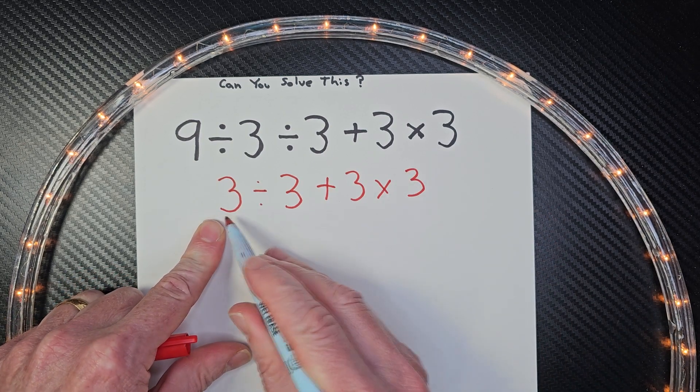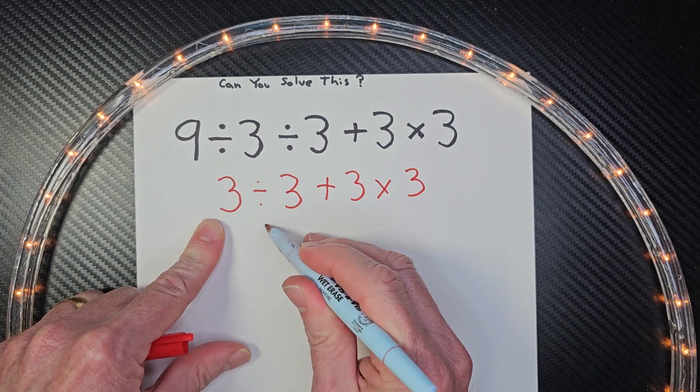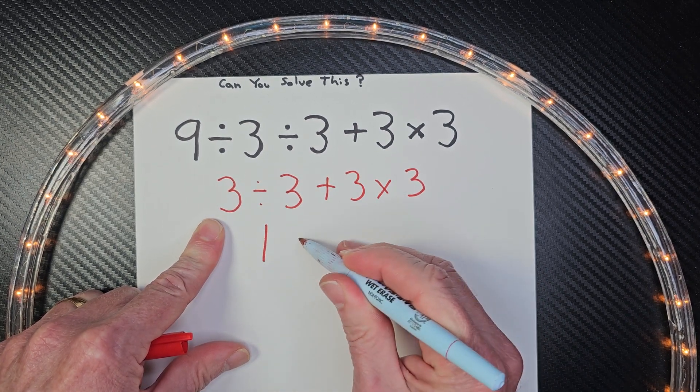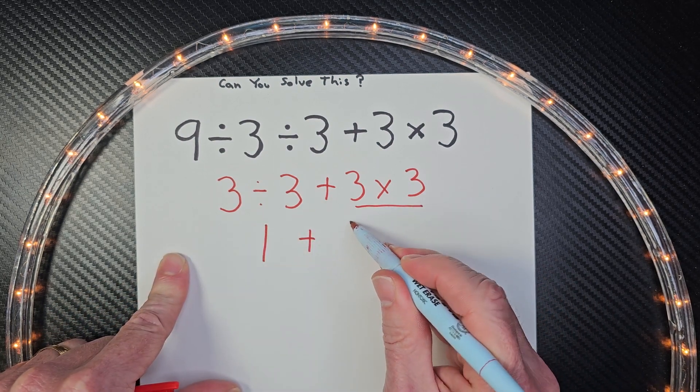So again, I'm going to go ahead working from left to right. So 3 divided by 3 would equal 1 plus 3 times 3, and that would equal 9.